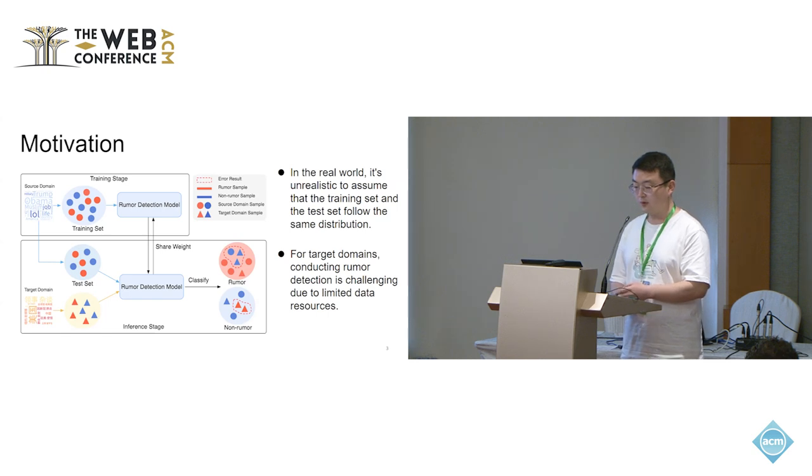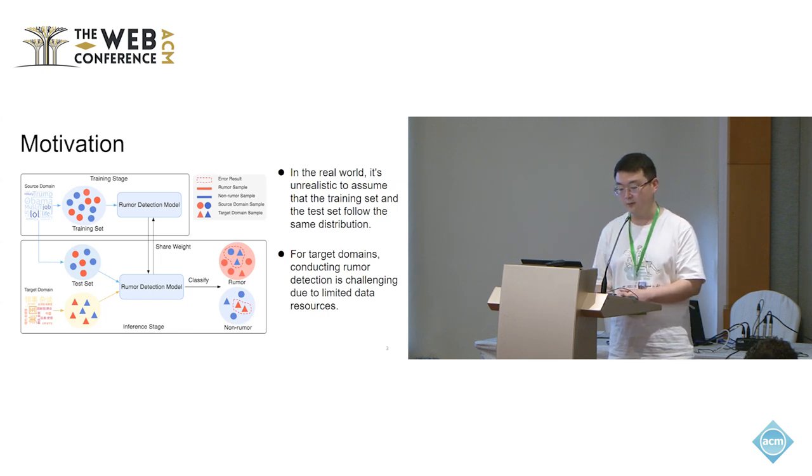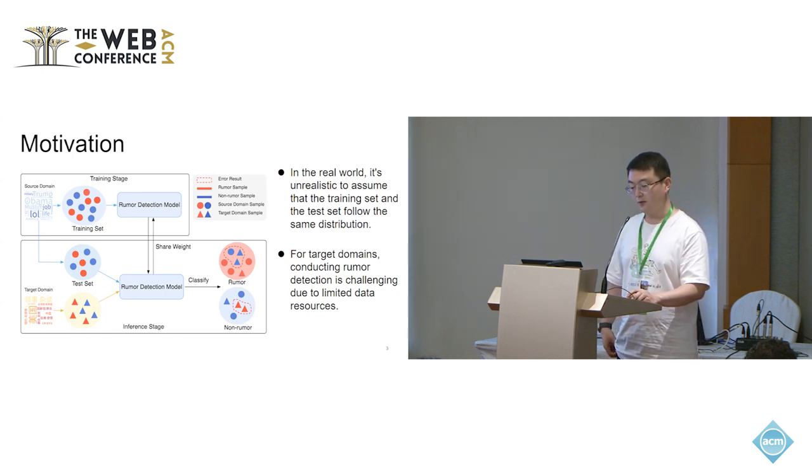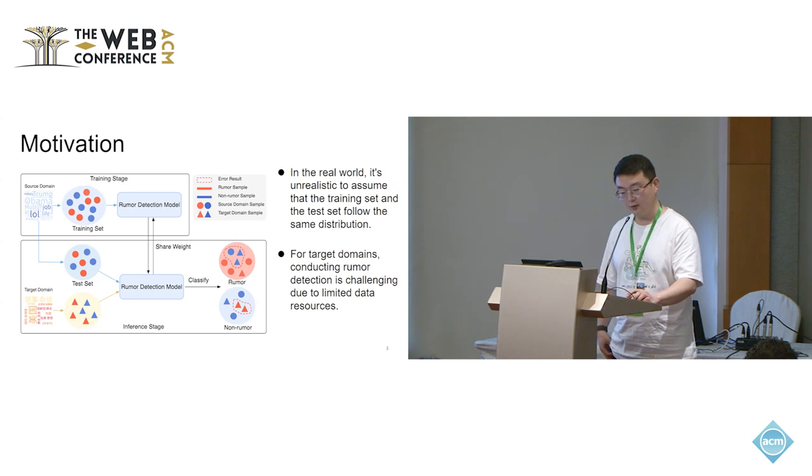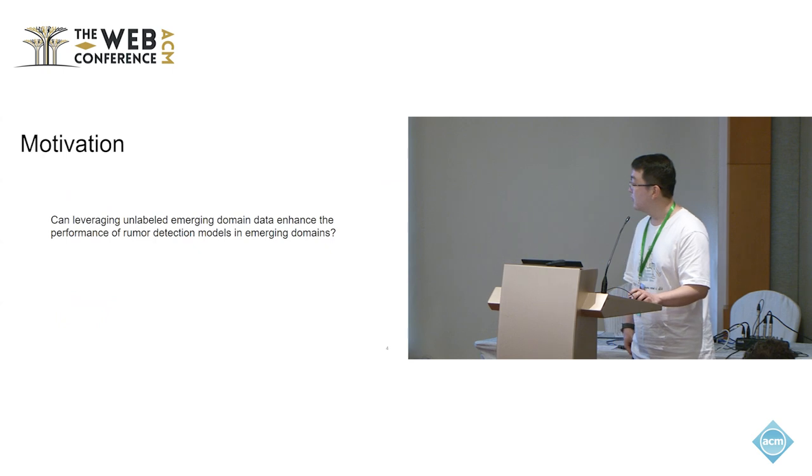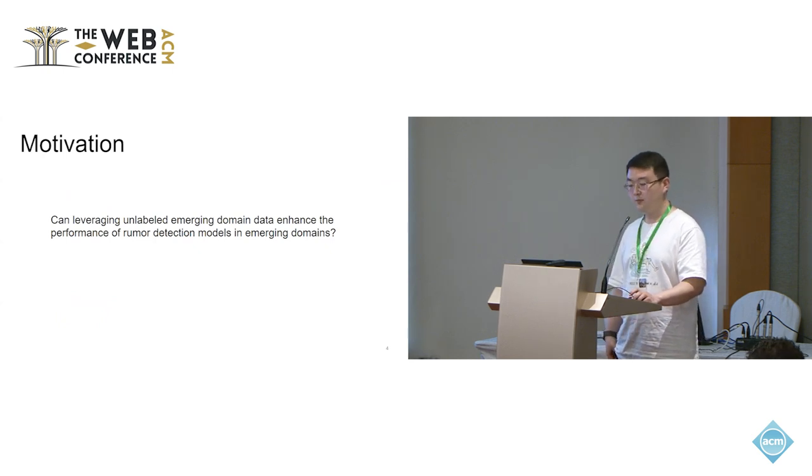In our work, we regard the datasets with abundant labeled data as the source domain and the datasets lacking labeled data as the target domain. The detection model is trained on the source domain. When the semantics of the target domain diverges from the source domain, the detection model trained solely on the source domain tends to show poor performance. So, it motivates us to ask: can we improve rumor detection model performance in the target domain by leveraging the unlabeled target domain dataset?